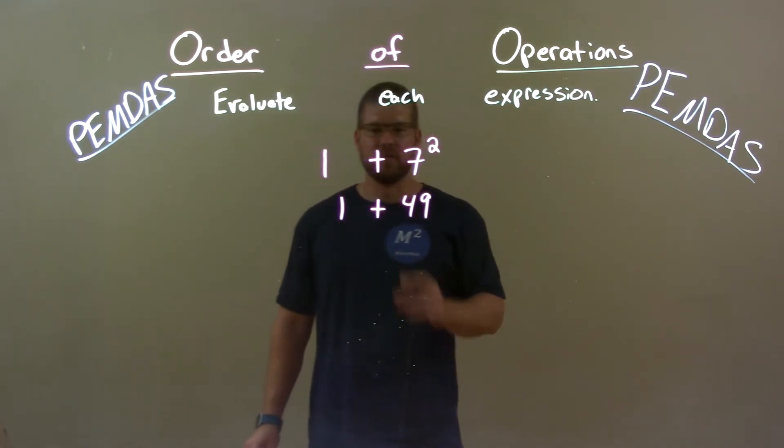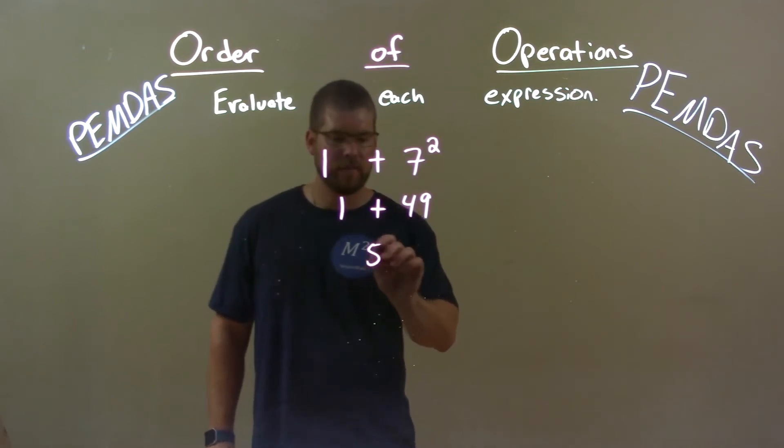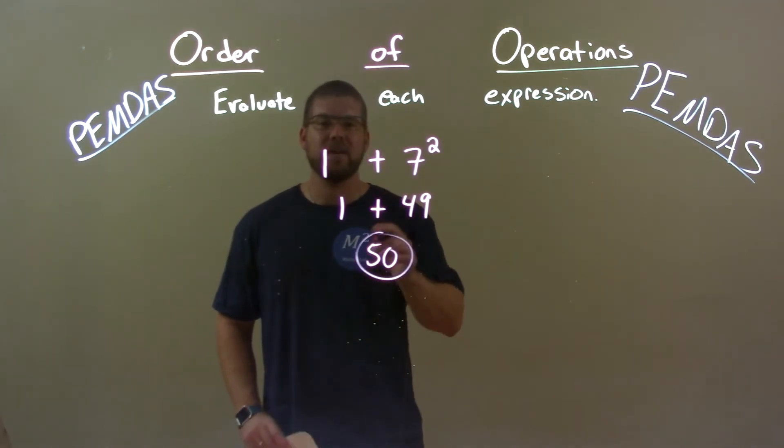Now we can deal with the addition. 1 plus 49 is 50. So final answer here is just 50.